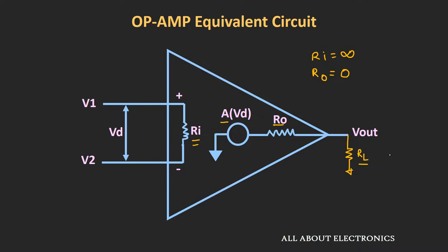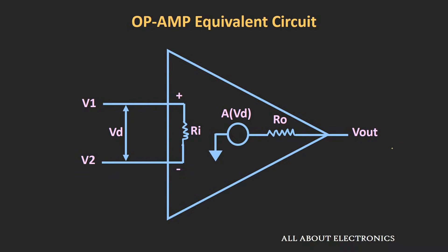The bandwidth of the ideal op-amp should also be equal to infinity, meaning it should support all frequencies from zero hertz up to infinite. Similarly, the gain of the ideal op-amp should also be equal to infinite. Apart from that, whenever both input terminals are zero — that is, the input is zero — the output of the ideal op-amp should also be equal to zero. Additionally, there are parameters such as slew rate and common mode rejection ratio.